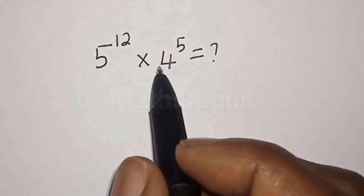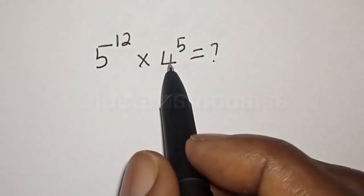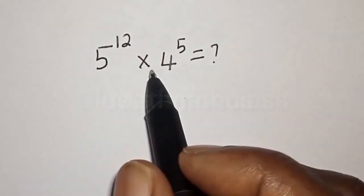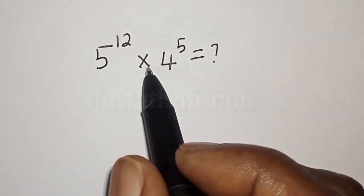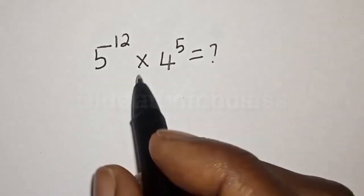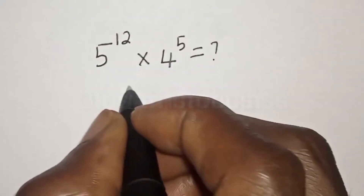5 raised to power 12 multiplied by 4 raised to power 5 is equal to 1. We want to simplify this math problem.